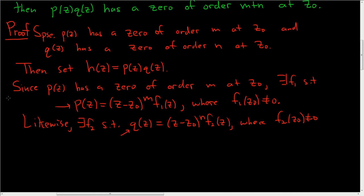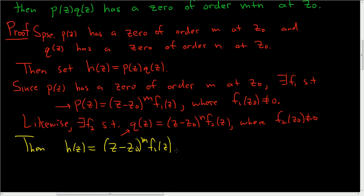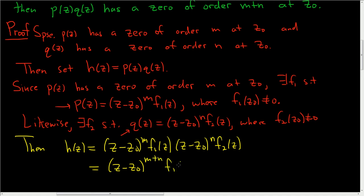Now let's look at the product again. H of Z is equal to P times Q, so it's going to be Z minus Z naught to the M times F sub 1 of Z — that's P of Z — and then Q is Z minus Z naught to the N times F sub 2 of Z. We can rewrite this as Z minus Z naught to the M plus N times F1 of Z and F2 of Z.